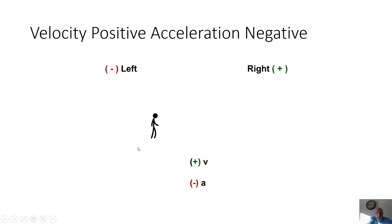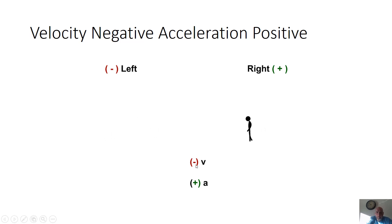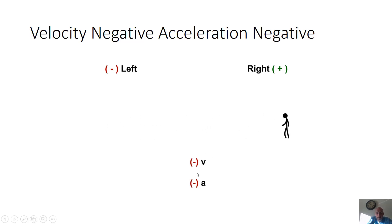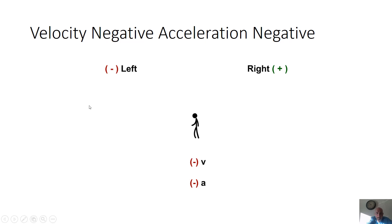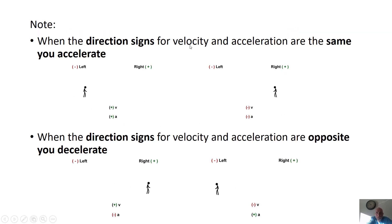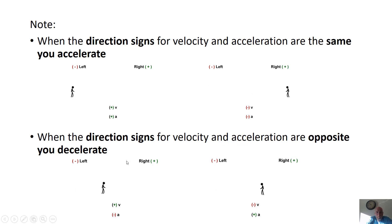Next: positive velocity but negative acceleration — he's still moving to the right, but velocity is changing to the left, so he's slowing down. Then: negative velocity (moving left) but positive acceleration (changing velocity to the right), so he's slowing down — becoming less negative. Finally: negative velocity and negative acceleration — he's getting faster and faster to the left. Remember, negative doesn't mean slow; it just means leftward. If direction signs for V and A are the same, you accelerate; if opposite, you decelerate.